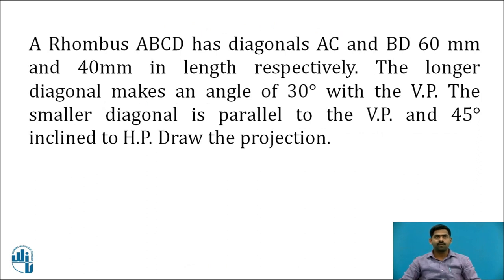Now consider the problem: rhombus ABCD with diagonals AC and BD, 60mm and 40mm in length. The longer diagonal makes an angle of 30 degrees with the VP, and the smaller diagonal is parallel to the VP and 45 degrees inclined to the HP. Draw the projections.